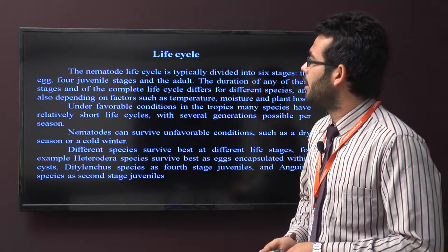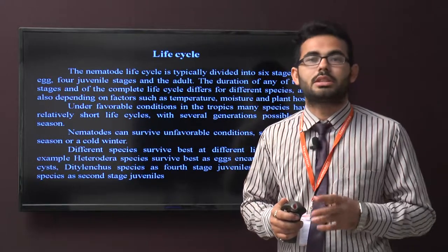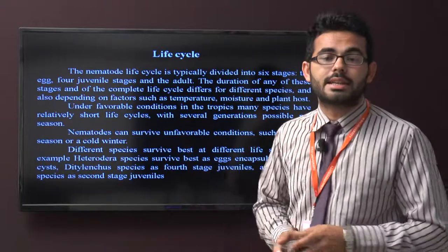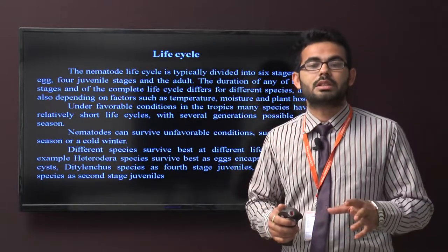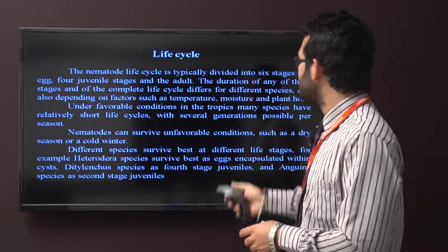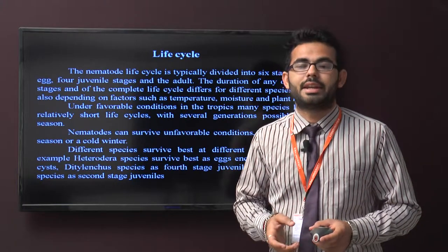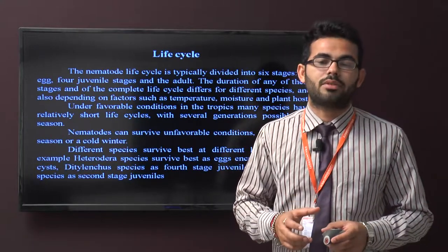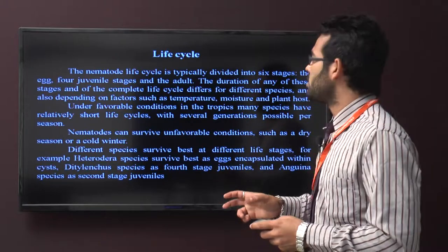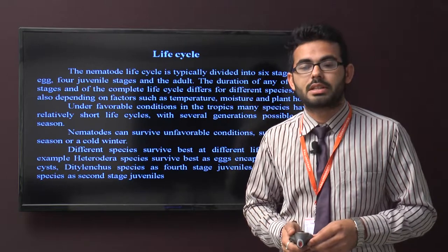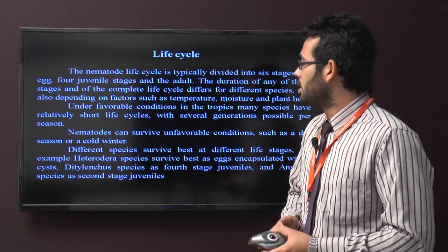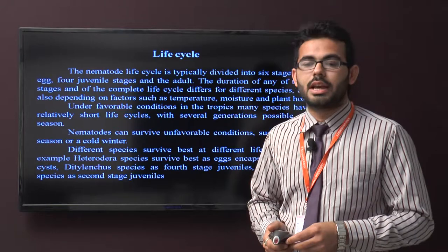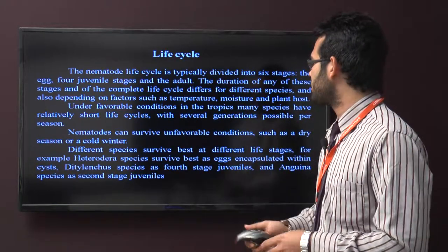Now the life cycle of nematodes. The nematode life cycle is typically divided into generally 6 stages: the first stage is egg, then stages 2 to 5 are called juvenile stages, and the last one is adult. The duration of these stages and the complete life cycle differs across species and depends on factors such as temperature, light, moisture, and plant host. Under favorable conditions in tropical areas, many species have relatively short life cycles with several generations possible per season. Nematodes can also survive unfavorable conditions such as dry or cold seasons. For example, Heterodera species survive best at the egg stage and Ditylenchus species survive best at the first juvenile stage.